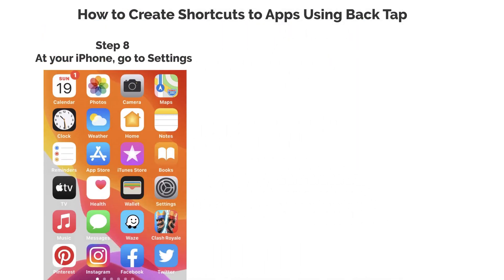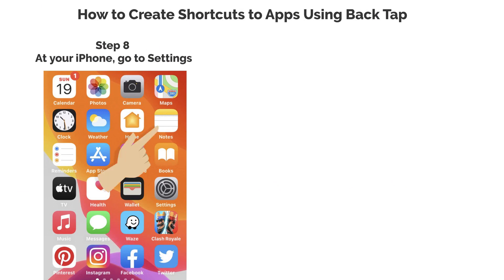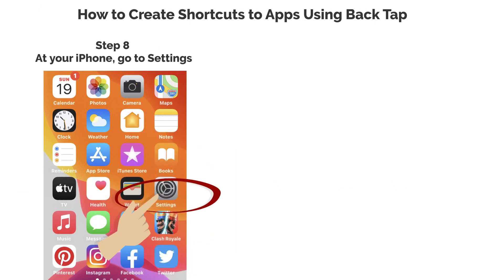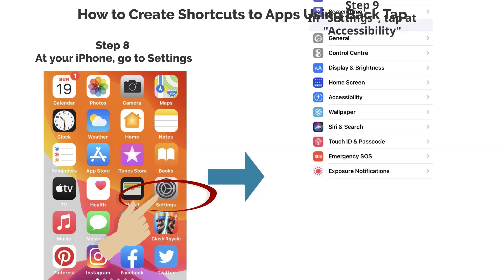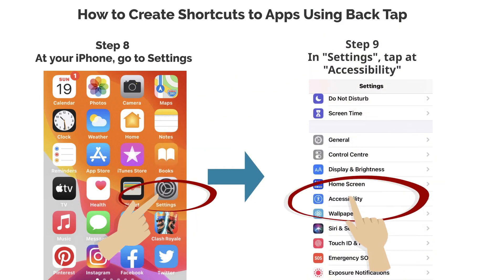Step 8. At your iPhone, go to Settings. Step 9. In Settings, tap at Accessibility.